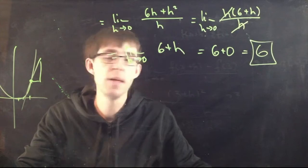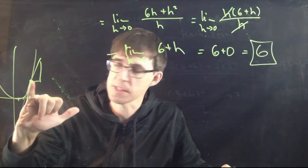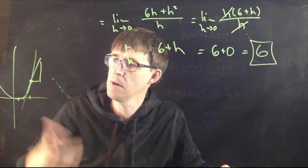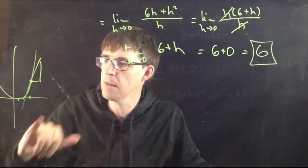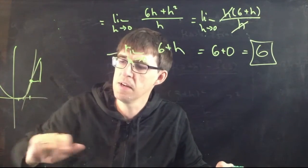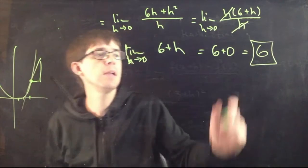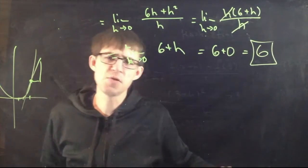6 is the answer. Apparently, the slope of this line right here is 6. That means it goes over 1 and up 6, which looks maybe reasonable. I don't know. I just drew this in a second. Not very accurately. All right, 6 is the answer. Let's just try one more.